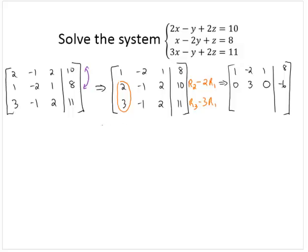Now going to the third row. So 3 subtract 3 1's is 0. Negative 1 subtract 3 negative 2's. That's negative 1 plus 6 is 5. 2 subtract 3 1's. 2 subtract 3 is negative 1. 11 subtract 3 8's. 11 subtract 24 is negative 13.